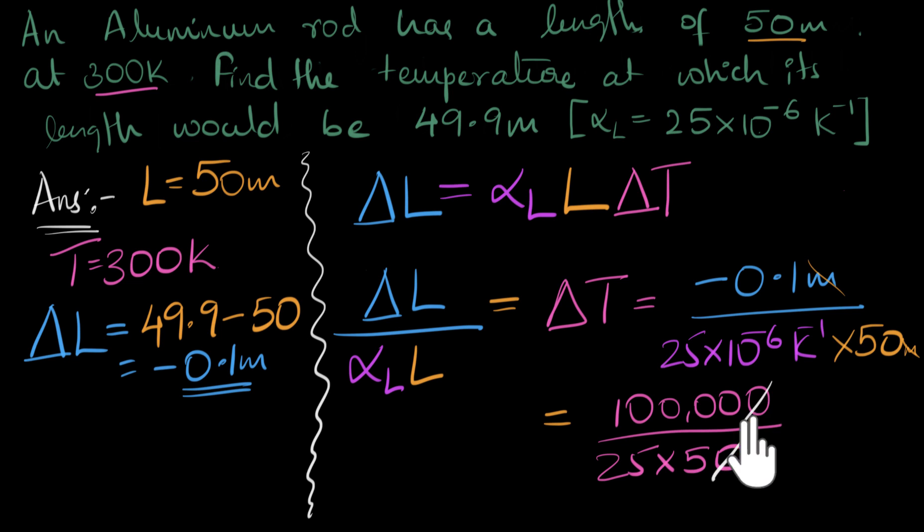So 1, 0 cancels. 25 goes 4 times. So we get 400 divided by 5. That gives us, oh, there's a negative, by the way, there's a negative sign. So that gives us minus 80 Kelvin.